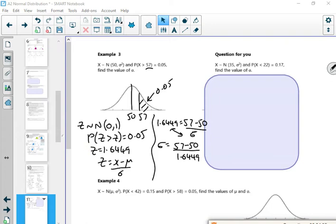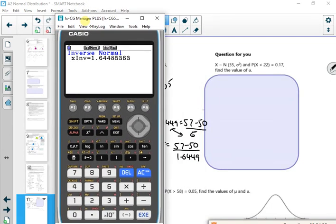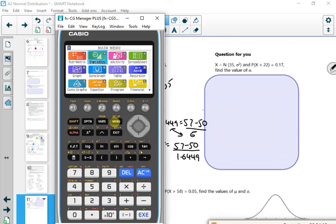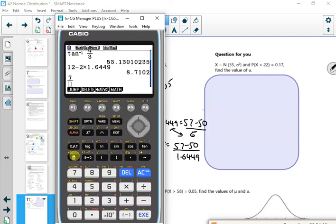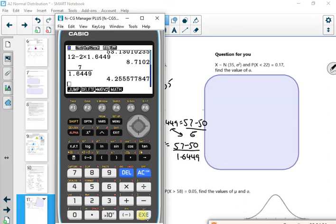So I'm still in the calculator, if I can get the calculator up. So what have I got? So menu 1, and then I've just got 7 over 1.6449. That gives me 4.26.